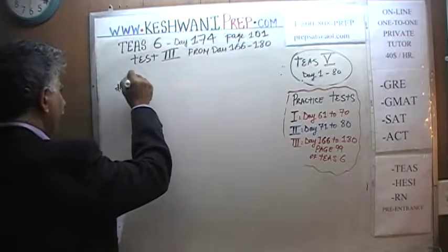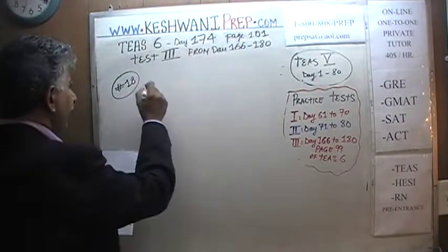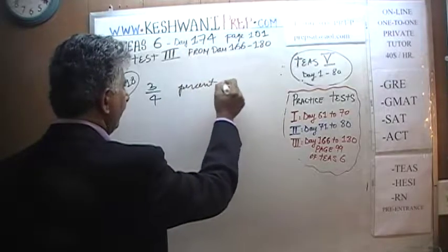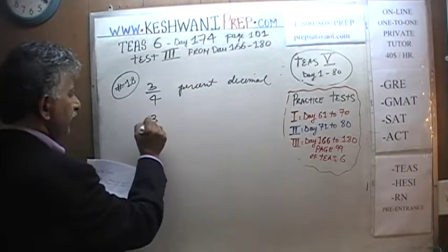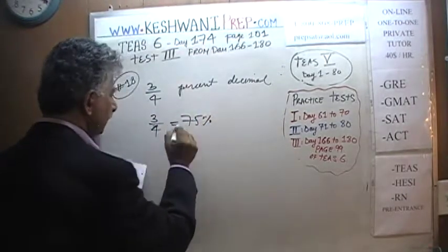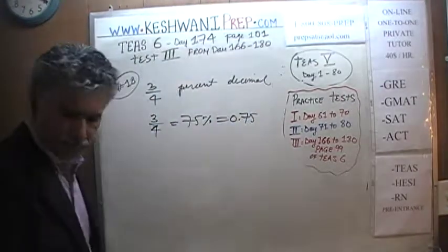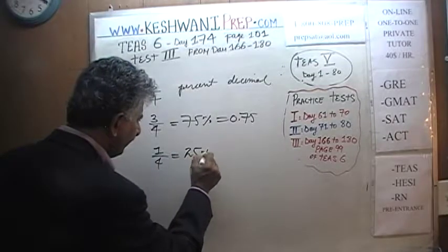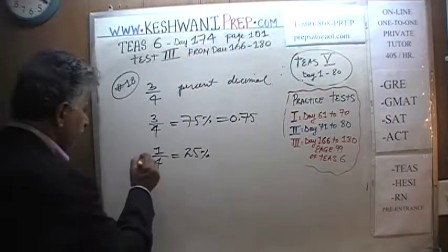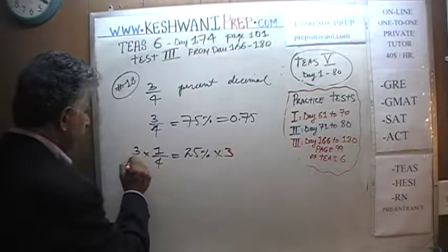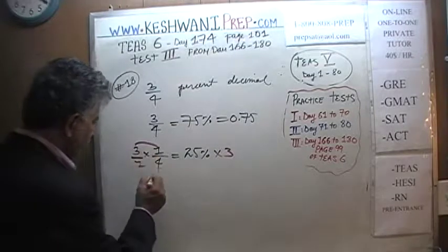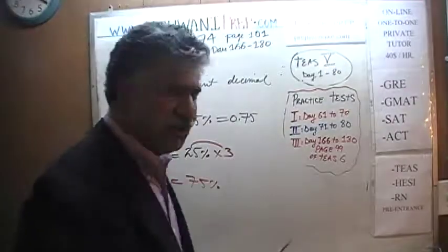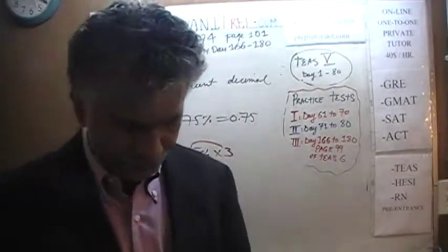Question number 18 is, I believe, the silliest question ever in the exam. They're simply asking us to figure out 3 quarters as a percentage and as a decimal. 3 quarters is just 75%, which is simply 0.75. How do we know that? Everybody knows that 1 quarter is 25%. If 1 quarter is 25%, multiply both sides by 3 — so 3 quarters equals 25 times 3, which is 75%. It's 75%, expressed in decimal as 0.75. I'll see you tomorrow. Bye now.